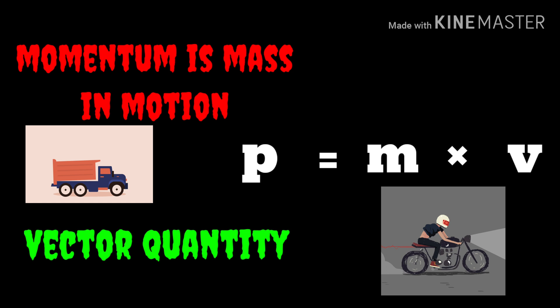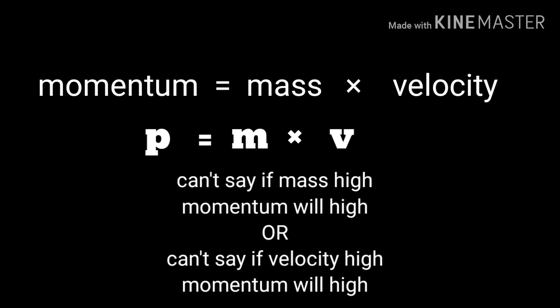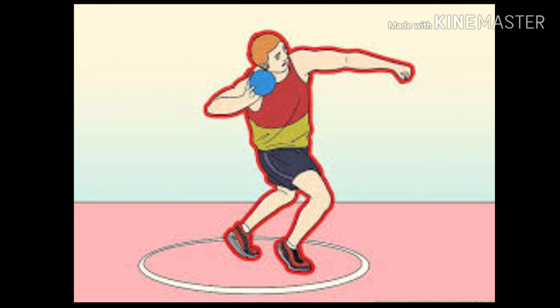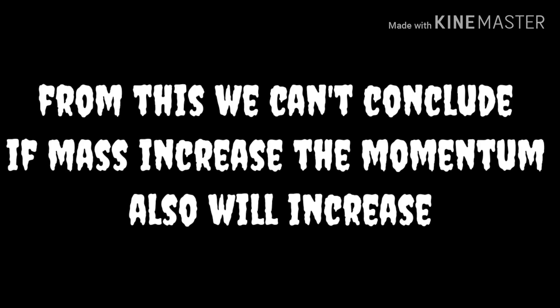Now we study the formulas related to momentum through some examples. We know momentum depends on both mass and velocity, so we can't simply conclude that if the velocity is increased the momentum will be high, or if the mass is high the momentum is high, because the momentum value depends on both variables. For example, if I throw a pencil you can easily catch it, but if I throw a shot put with the same velocity it's difficult to catch because the increase in mass also increases the momentum.